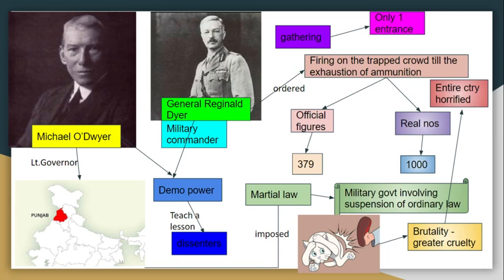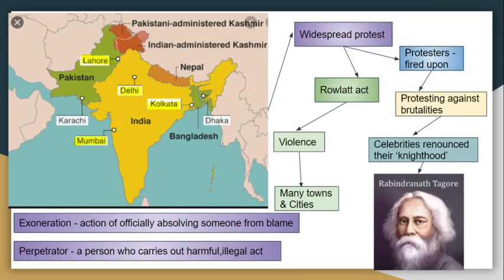In Punjab, martial law was imposed. Martial law is military government — ordinary law is suspended. This was a heinous crime. The entire country was horrified. There were widespread protests and a lot of unrest in the area.